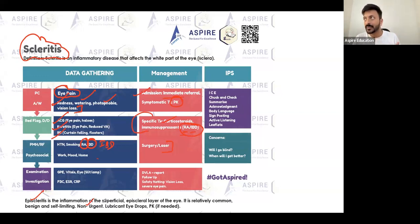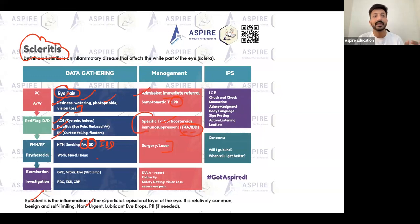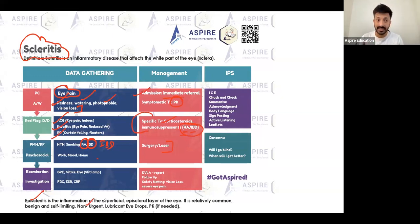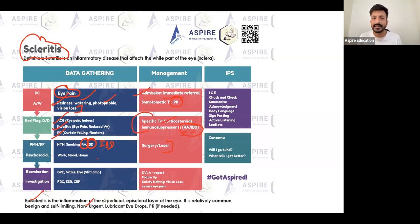For episcleritis, it's non-urgent. Give lubricant eye drops or artificial tears, and painkillers if needed. Key differentiator: history of RA, IBD, or being on methotrexate points more towards scleritis. Manage accordingly. Patients will ask when they'll get better or whether they'll go blind — you should be able to answer those. Know when immediate referral is needed versus non-urgent referral.